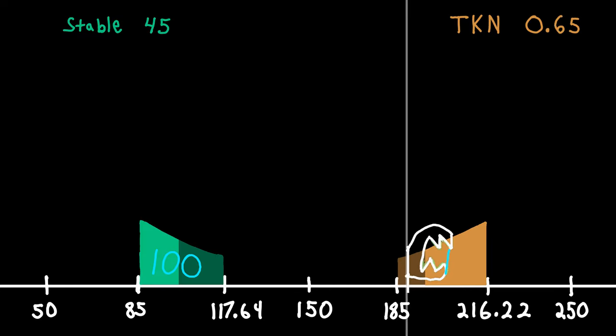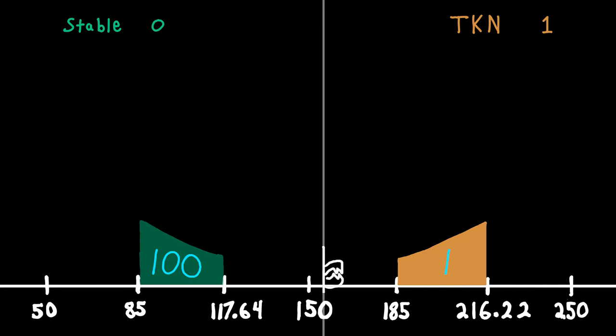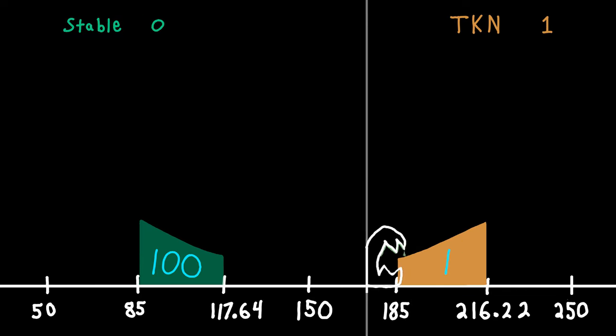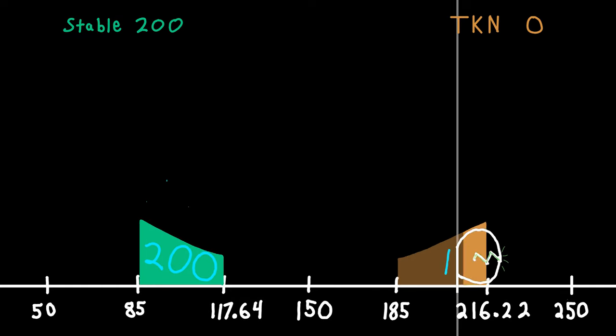If more stable is added to the buy range, there will be a new high score. Because there is a new high score, each additional increment of TKN, which is sold for stable, will see that stable evenly distributed across the whole buy range, making the entire range more liquid.